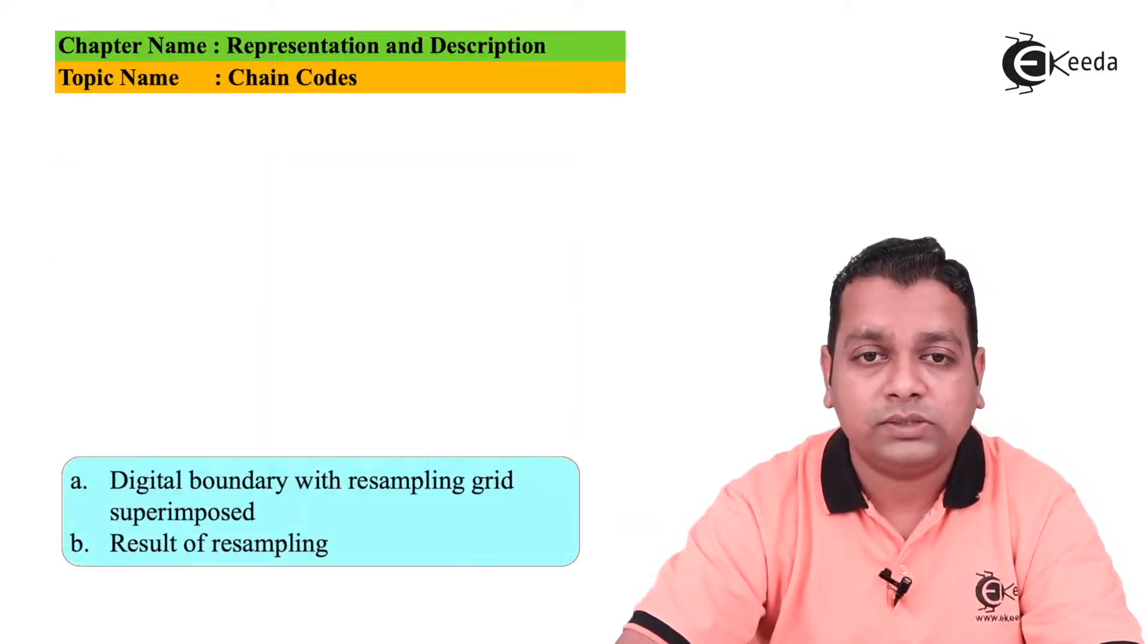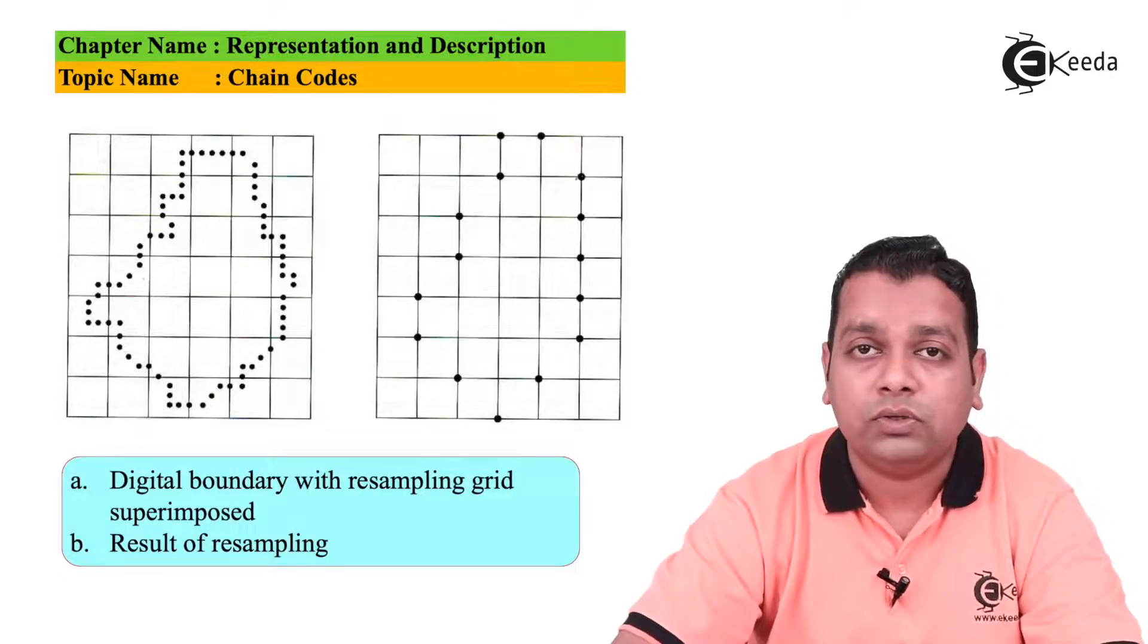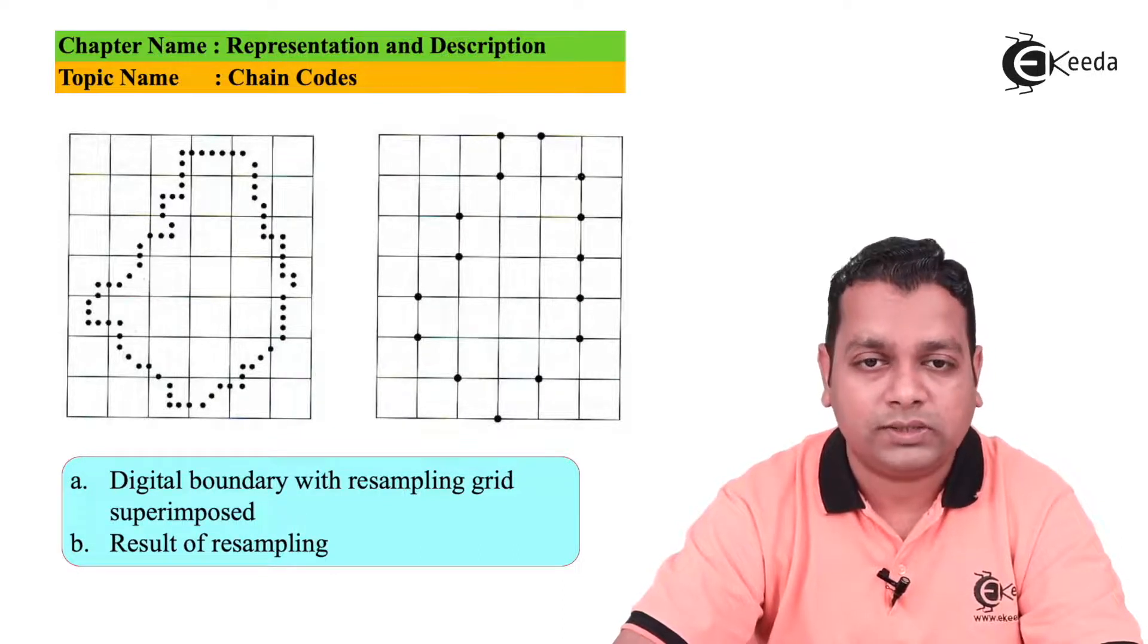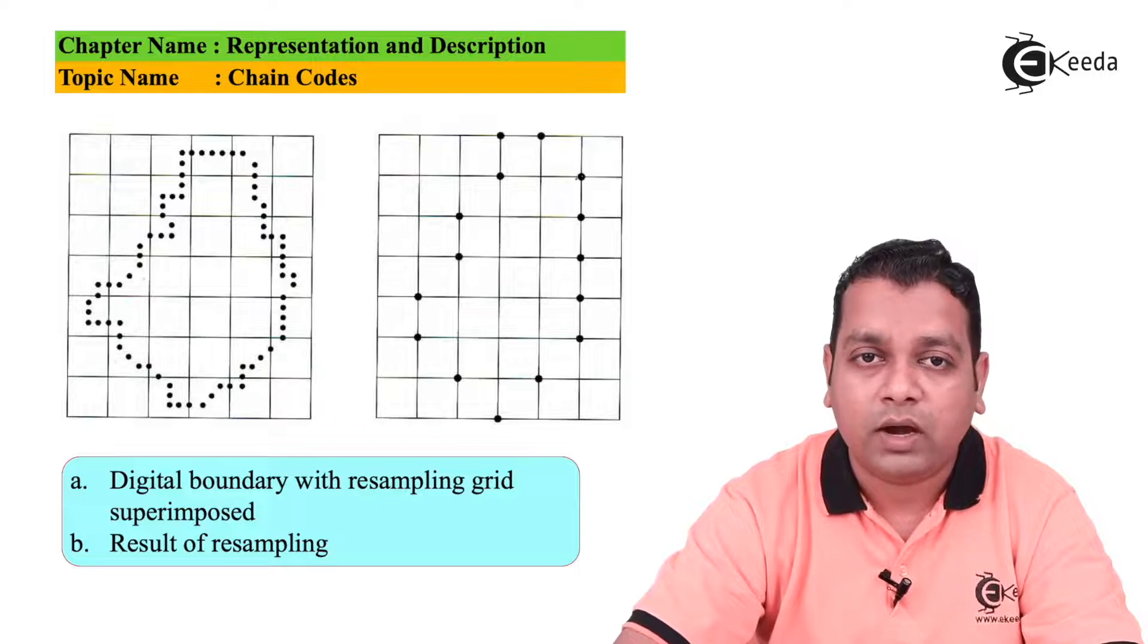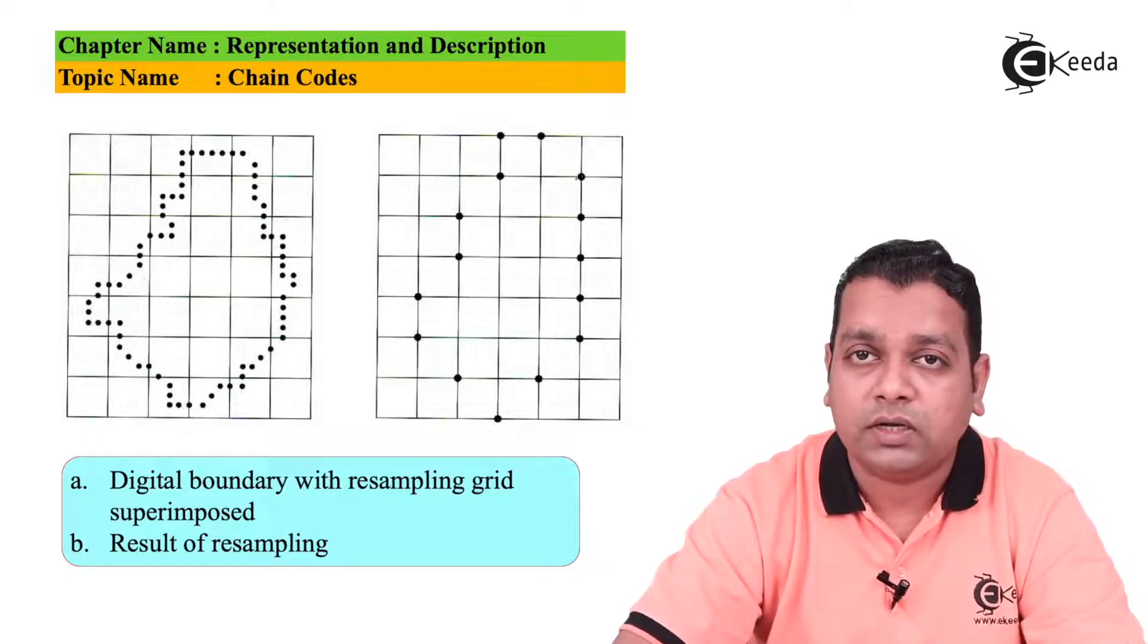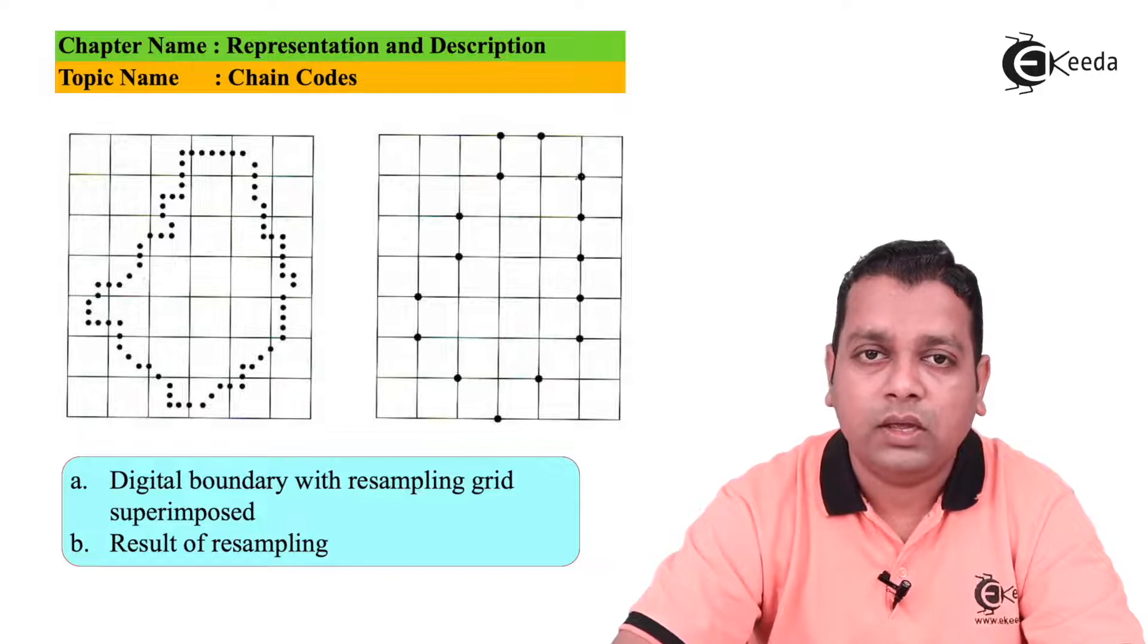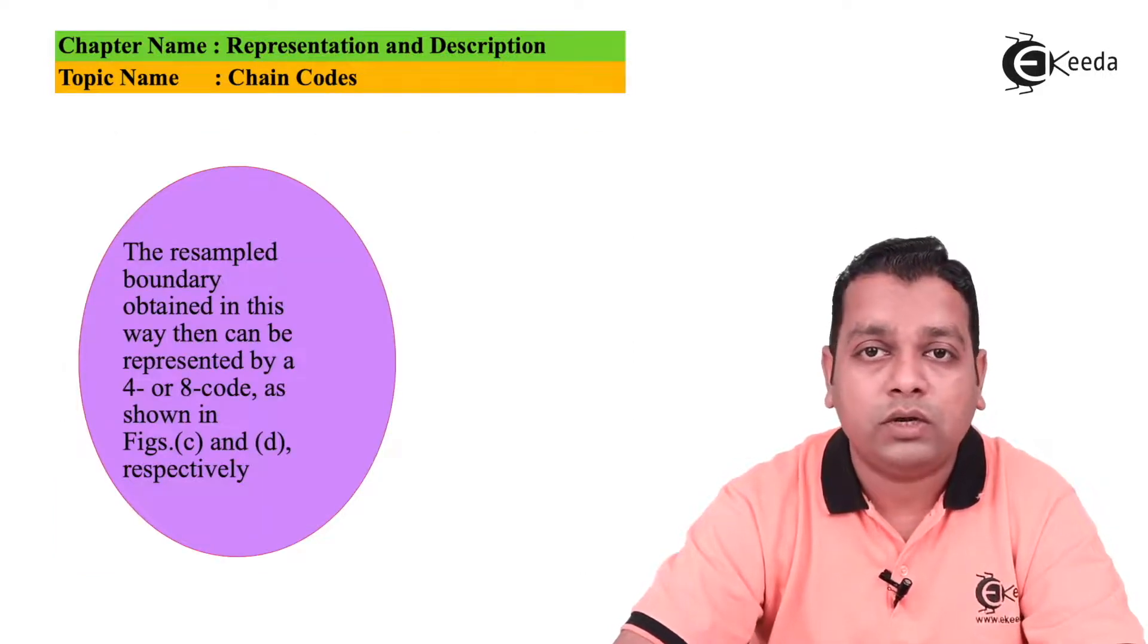So here we visualize both the figures. Digital boundary with resampling grid superimposed, figure A on the left hand side. This is figure B on the right hand side, the result of resampling. Here on the leftmost image you find many black dots because of resampling of the grid superimposed onto the image sample. The representation of the digital boundary here we have. And after resampling we have only few corners in the grid represented with the dark dots. The resampled boundary thus obtained in figure B